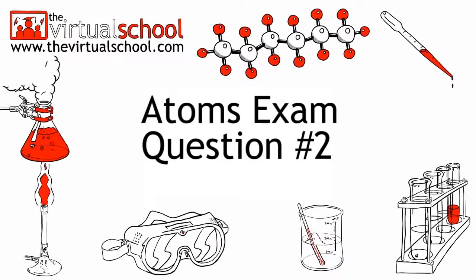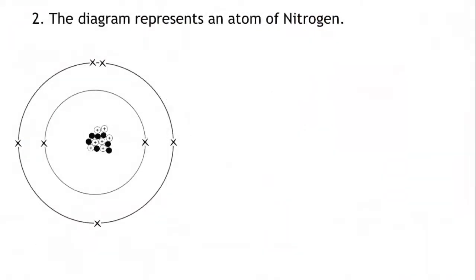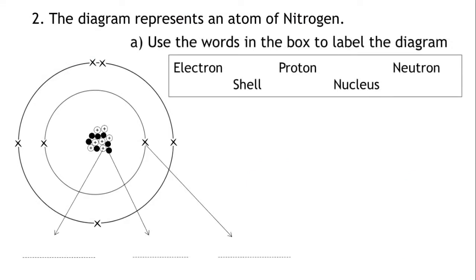Question 2. The diagram represents an atom of nitrogen. Part A. Use the words in the box to label the diagram.